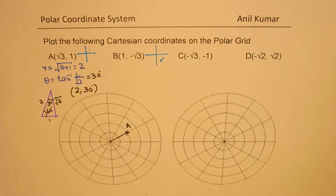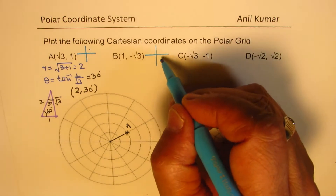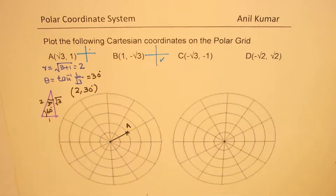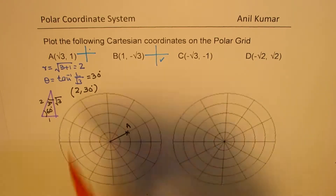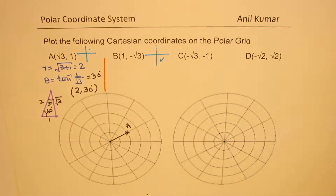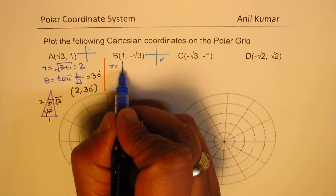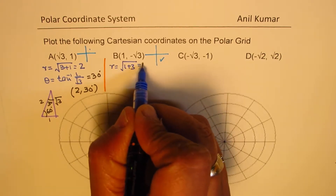Since we are in quadrant 4, the angle will be negative — the theta value will be negative. So let's find the value of r. r equals √(1 + 3), which is equal to 2.